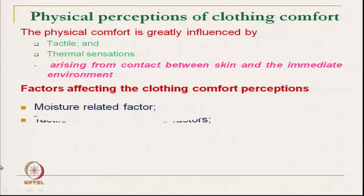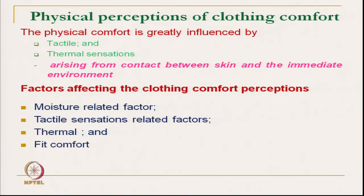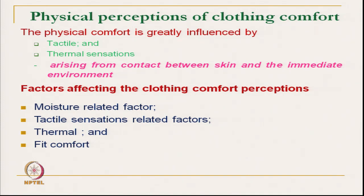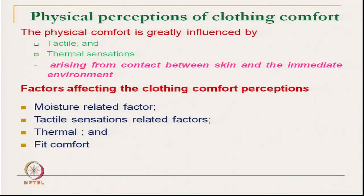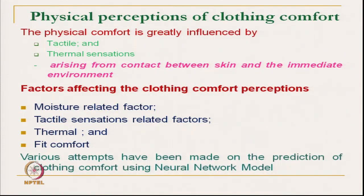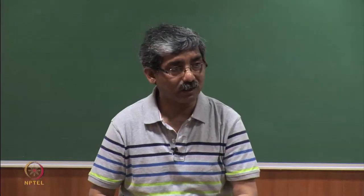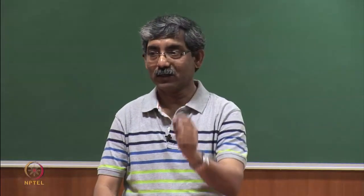Overall, the factors which affect the clothing comfort sensation are: moisture-related factor (whether it transmits moisture), tactile sensation related factor, thermal factor, and fit-related comfort factor. These are the physical factors which send signals along with some aesthetic factors which are not measurable. There are various attempts made to actually measure perceived comfort, including statistical attempts and neural network techniques.